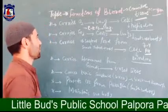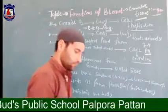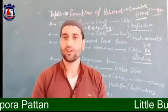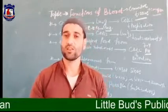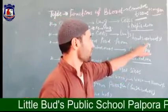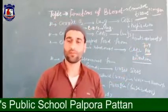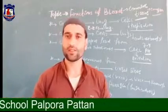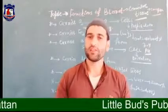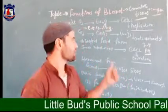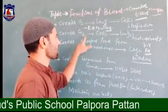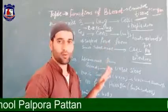Blood also carries carbon dioxide from the cells to the lungs and then outside the body. As we know, carbon dioxide is produced during respiration and it is toxic. The blood transfers carbon dioxide from cells to the lungs and then outside of the body, which is also an important role of blood.